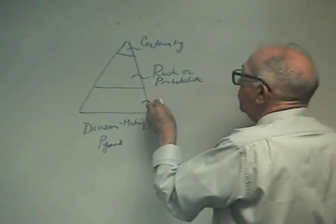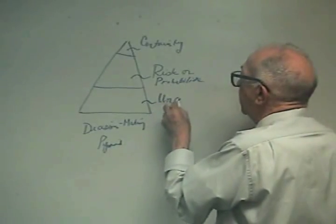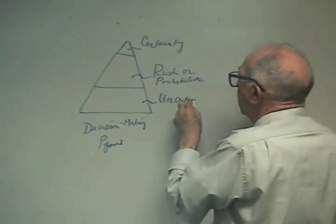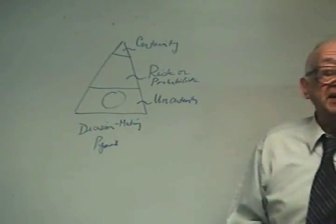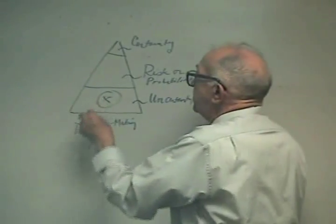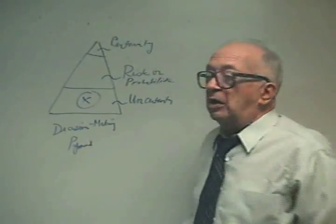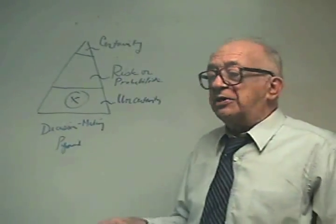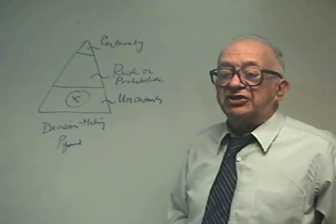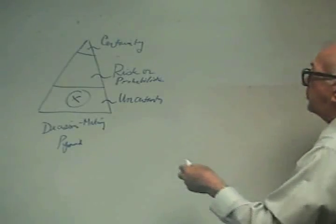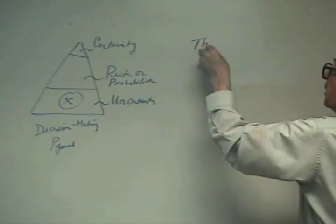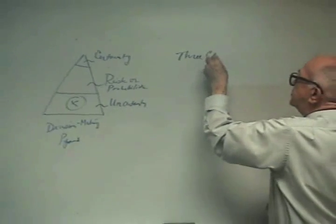The last level here we call uncertainty. This is the level that most of our decisions are made. We don't know what the probabilities are, but what's going to occur. We say we have to make a decision. Now all decision matrices that we have here are composed of three characteristics.